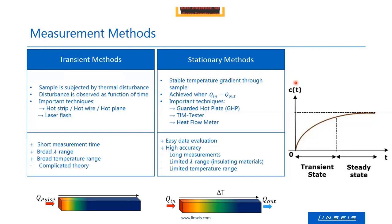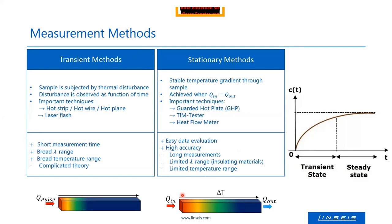When thermal conductivity needs to be measured, in principle there are two different methods. The older one is the stationary method. For many years, thermal conductivity was measured with plate instruments. The working principle is that you have a sample with a hotter plate on one side and a colder plate on the other, and you wait until you have a constant temperature gradient within the sample. The heat flux is measured, and from the heat flux and the delta T, the thermal conductivity can be easily calculated.